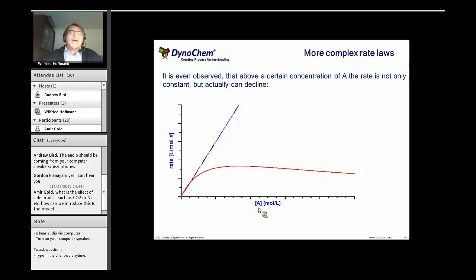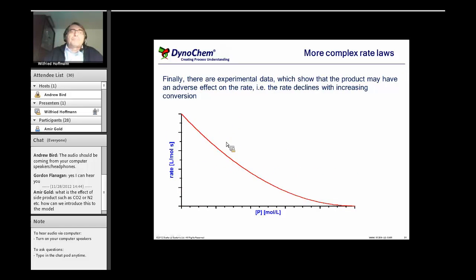The same that we observed for A can be observed with hydrogen concentration as well. There are cases where there is actually no hydrogen pressure dependence on your reaction. And last but not least, the product concentration can interfere with the rate. The more product we form, the lower will be the rate.